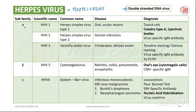Coming to the alpha subfamily — alpha-herpesviridae. Under that, we have three members: human herpesvirus 1, human herpesvirus 2, and human herpesvirus 3. Human herpesviruses 1 and 2 are termed herpes simplex virus — herpes simplex virus type 1 and herpes simplex virus type 2.